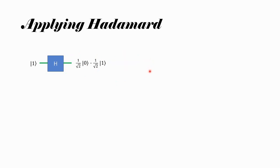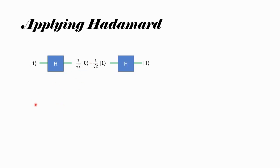Now let's see what happens when the Hadamard gate is applied to qubit state |1⟩. It is very similar to |0⟩ — the only difference is that for the |1⟩ component, the amplitude has a phase of minus. There is a minus sign instead of plus. And again, just like previously, when you apply Hadamard again, it goes back to |1⟩.